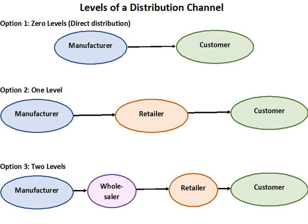Distribution, or place, is one of the four elements of the marketing mix. Distribution is the process of making a product or service available for the consumer or business user who needs it. This can be done directly by the producer or service provider, or using indirect channels with distributors or intermediaries. The other three elements of the marketing mix are product, pricing, and promotion.